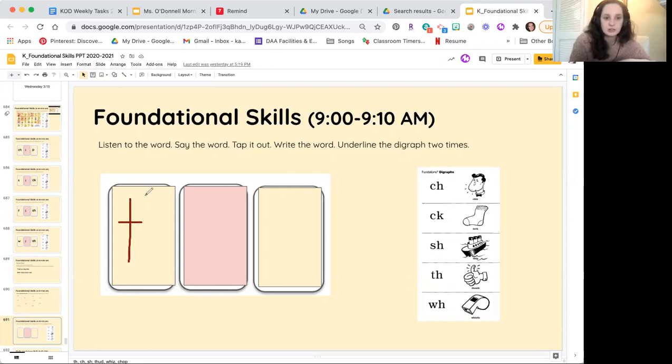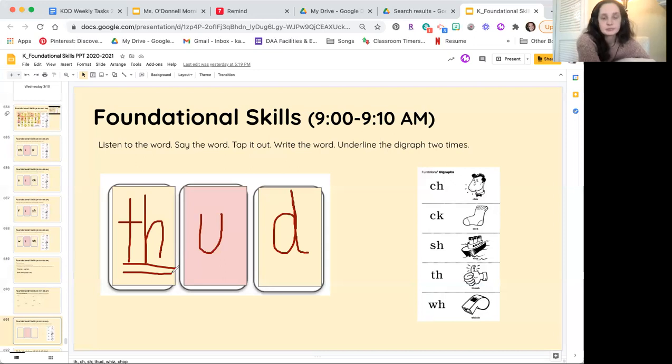Thud was T-H. Thud. Uh, uh, uh sounds like a U. And D. I'm going to double-underline my T-H because that's a digraph. Thud. Alright, let's head to the next word.